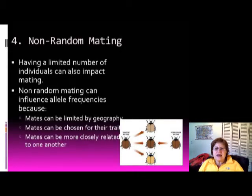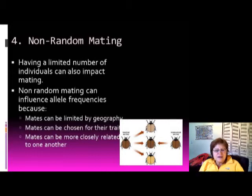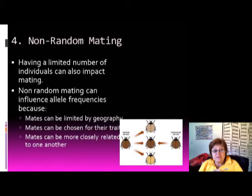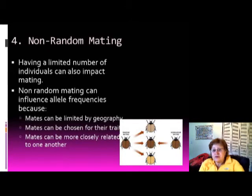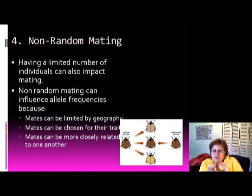Non-random mating occurs when there is a limited number of individuals available to mate, which impacts allele frequencies. Mates can be limited by geography — for example, on an island with only a few people. Sometimes mates are chosen for specific traits, such as a preference for individuals with spiky hair, or mates may be more closely related to each other.